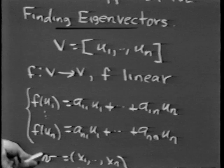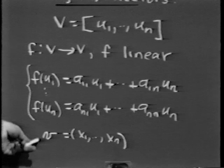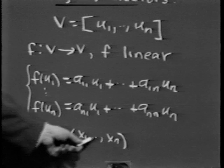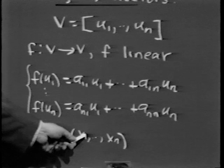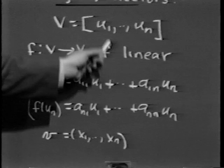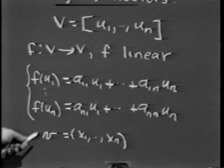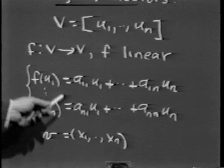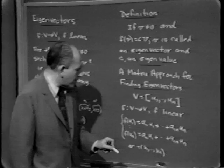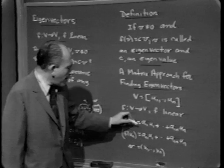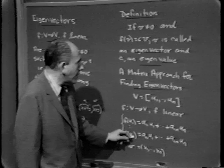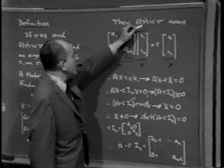The vector v we're trying to find — the eigenvector — relative to the basis u₁ through uₙ can be written as the n-tuple (x₁, ..., xₙ), which is an abbreviation for v = x₁u₁ + ... + xₙuₙ. The question is how does the statement f(v) = cv translate into matrix language. We take the matrix A whose first column is the components of f(u₁) and whose n-th column is the components of f(uₙ). So f(v) corresponds to the matrix product A times the column vector x.